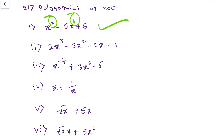Here, for x, power is 3. For x, power is 2. For x, nothing is there — means 1. So 3, 2, 1 — all three are whole numbers only. So this is also a polynomial.